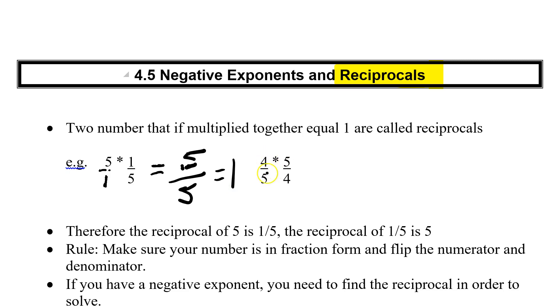Same way, if we've got 4 fifths and 5 over 4. 4 times 5 is 20 over 20, which of course equals 1. So our reciprocal is simply the numerator and denominator flipped. So we can say that 5 is the reciprocal of 1 fifth. And in reverse, 1 fifth is the reciprocal of 5.